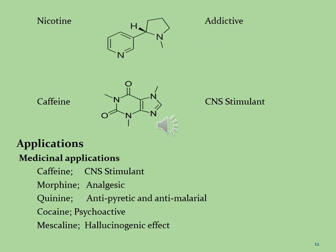Ephedrine is used as an anti-asthmatic drug and is isolated from the Ephedra plant. The next molecule is nicotine, which has two nitrogen atoms within the heterocyclic ring and is used as an addictive drug. Caffeine is used as a CNS stimulant, with four nitrogen atoms present within the heterocyclic system. Now, regarding the medicinal applications of alkaloid molecules: caffeine is used as a CNS stimulant, morphine as an analgesic drug, cocaine as a psychoactive drug, and mescaline for hallucinogenic effects.